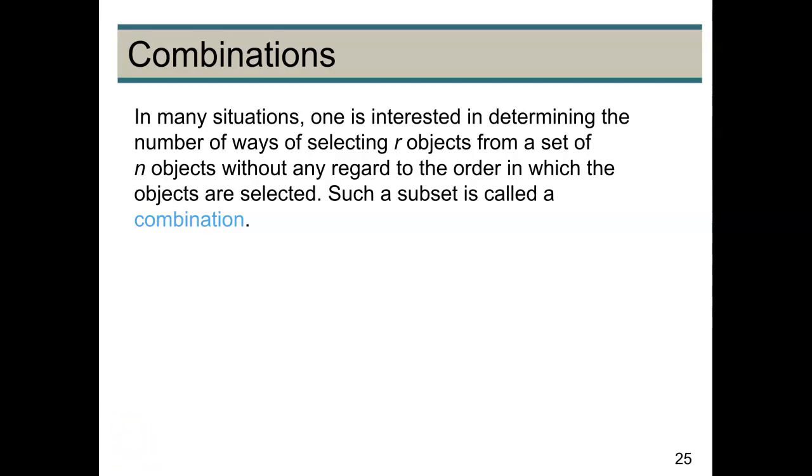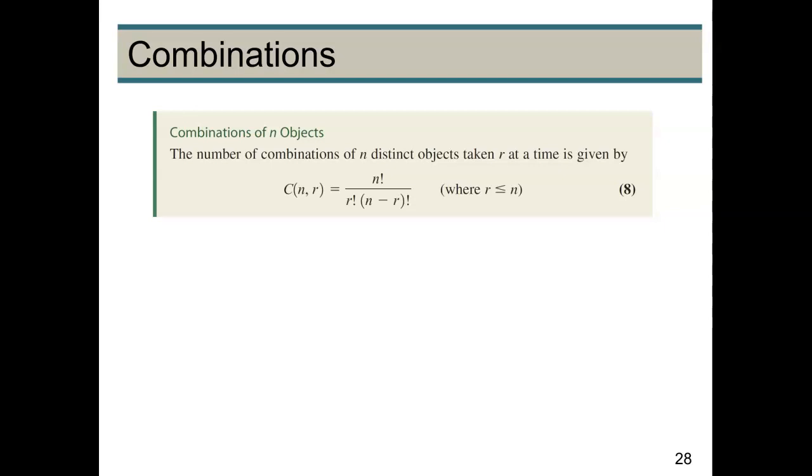So of course, if order isn't important, then we're going to have fewer outcomes. So here's our formula for the combination of n objects taken r at a time. You're going to have n factorial over r factorial times n minus r factorial. So we're dividing by an additional r factorial than we were when we used permutations.